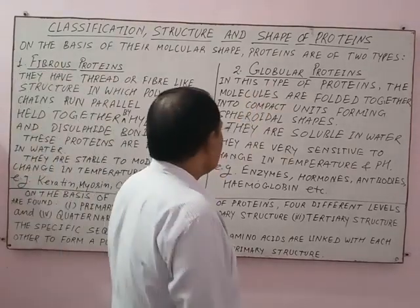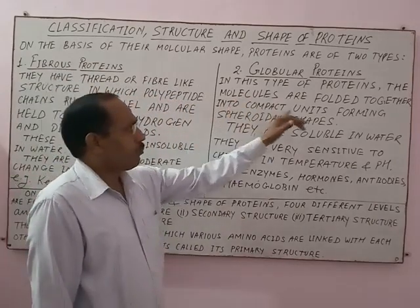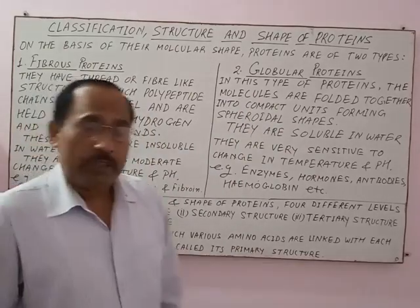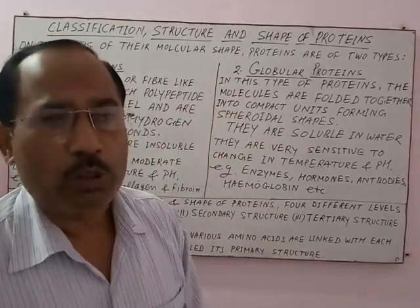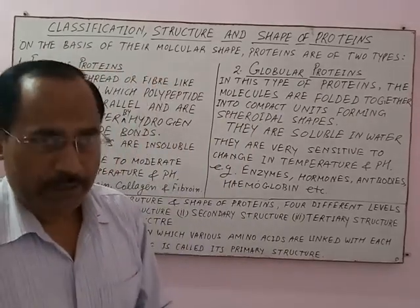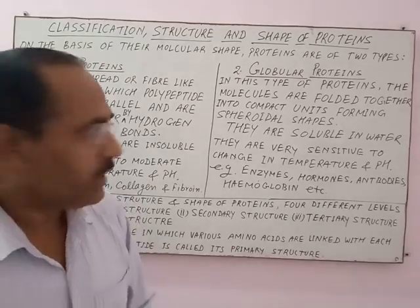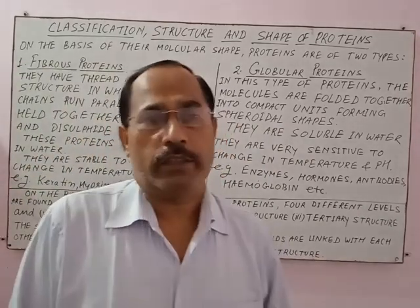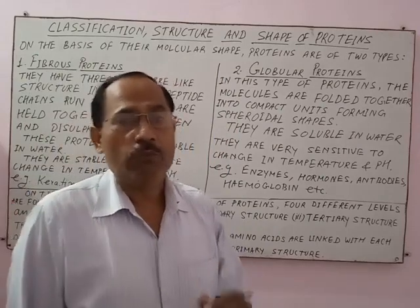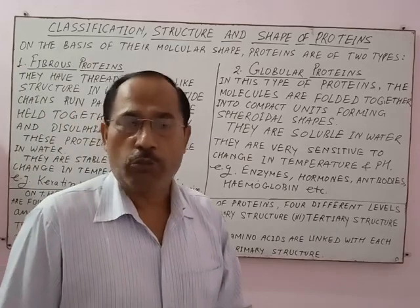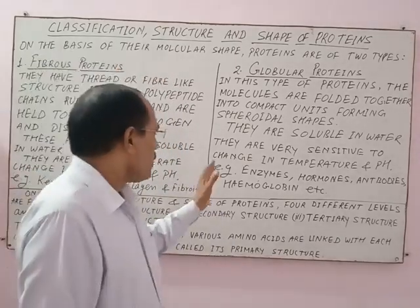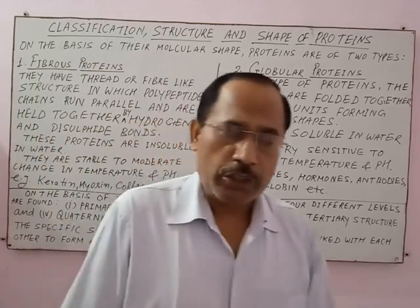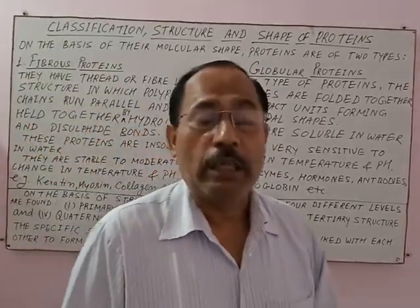In globular proteins, the molecules are folded together into compact units forming a spheroidal shape. The intermolecular forces of attraction in globular proteins are relatively weak compared to fibrous proteins. As a result, globular proteins are soluble in water due to these relatively weak forces of attraction between structural units.